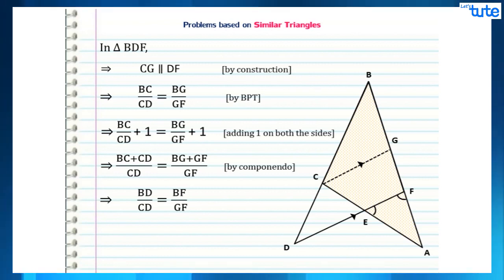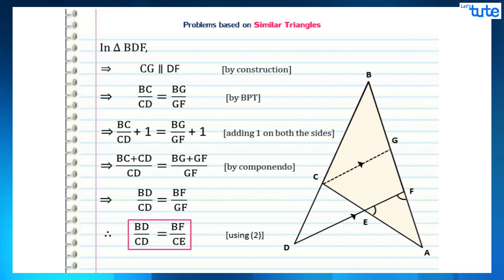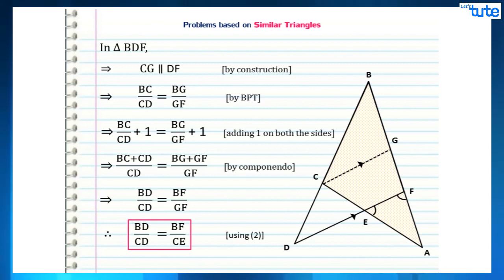We have derived in equation 2 that GF = CE. Therefore, by substituting this in the above equation, we get BD/CD = BF/CE. Hence proved.